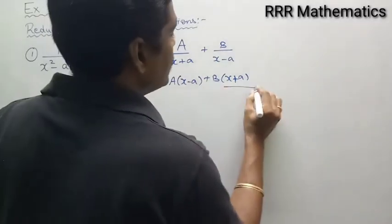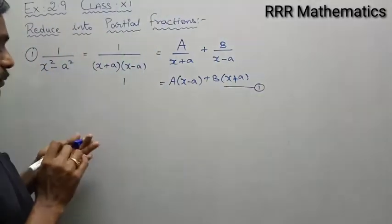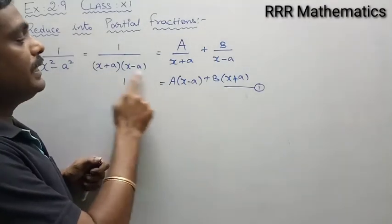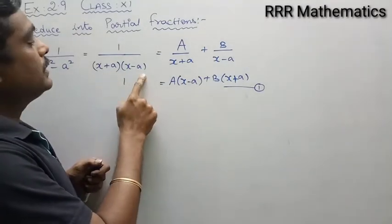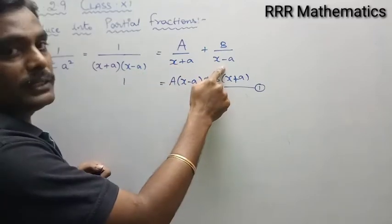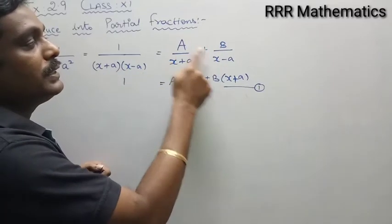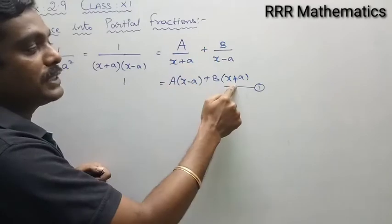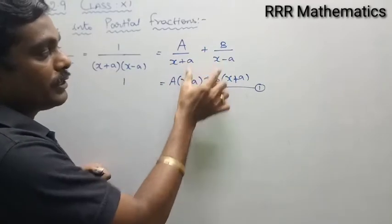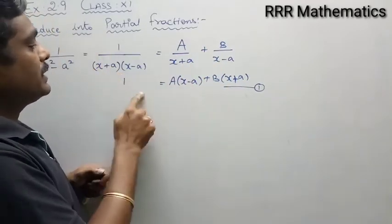To summarize: since both factors are linear, I write A over x plus a plus B over x minus a. Taking the LCM gives A times x minus a plus B times x plus a over the product x plus a times x minus a. The denominators cancel, leaving 1 equals A times x minus a plus B times x plus a.